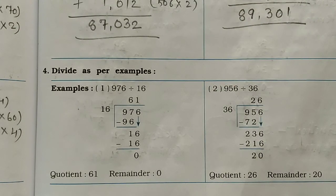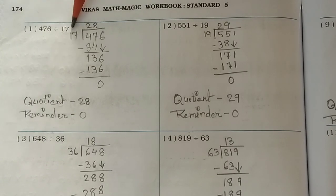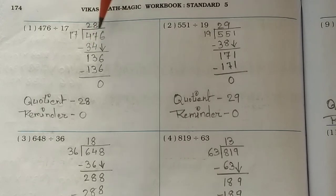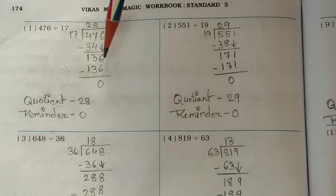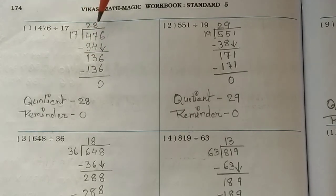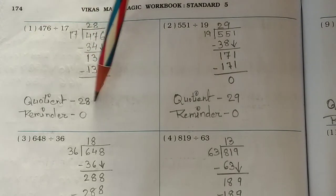Turn your page — this is page number 174. The first number is 476 divided by 17. Write 17 here. 17 twos are 34 — write 34, subtract from 47 and you get 13. Bring down the 6 to get 136. 17 eights are 136, so remainder is 0 and the answer is 28.